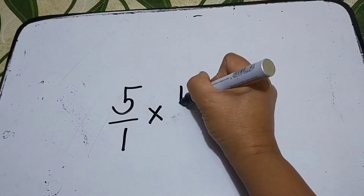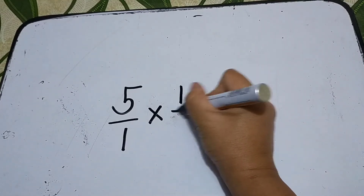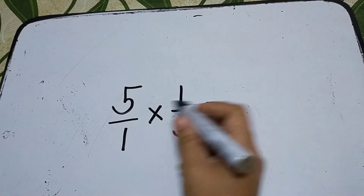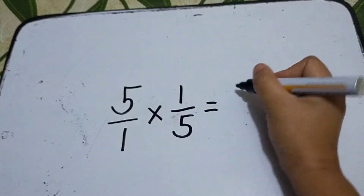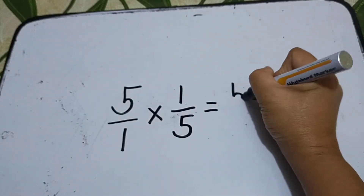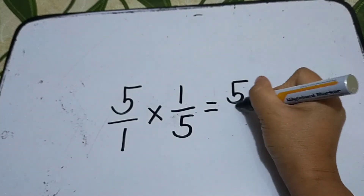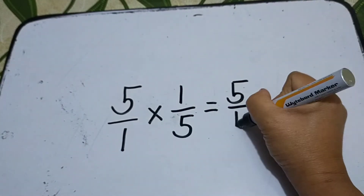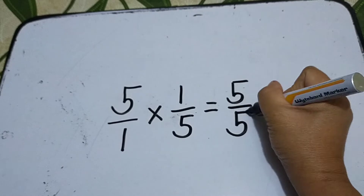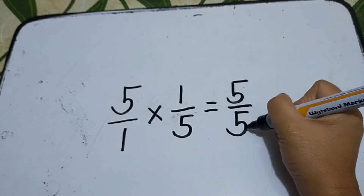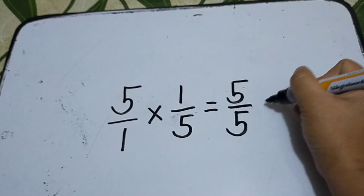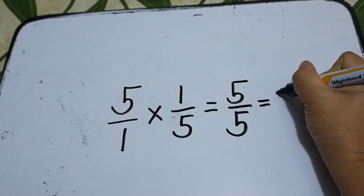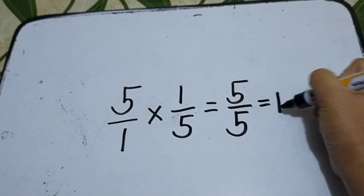Then the reciprocal of 5 over 1 is 1 over 5. Multiply: 5 times 1 is 5, and 1 times 5 is 5, so 5 over 5 — or 5 divided by 5 — is equal to 1.